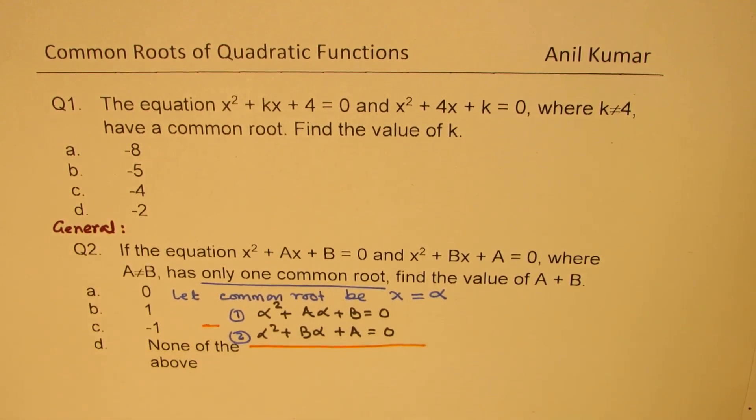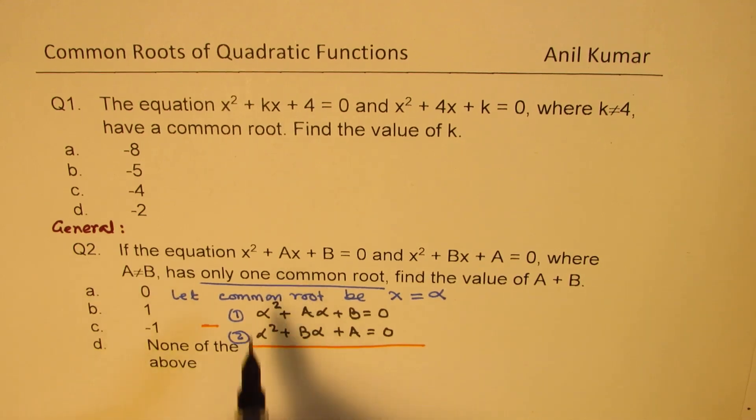So if we subtract one from the other, α² cancel, we get (a - b) times α, right? Let me write (a - b) times α plus we have here b - a = 0.